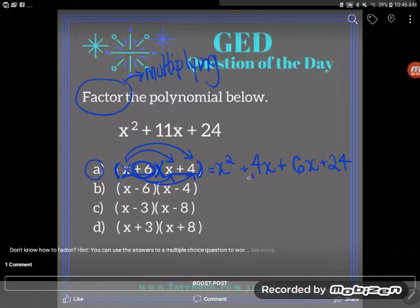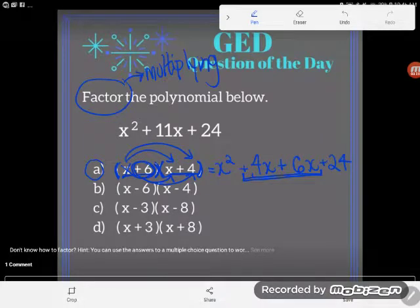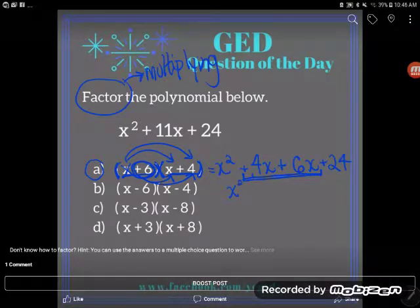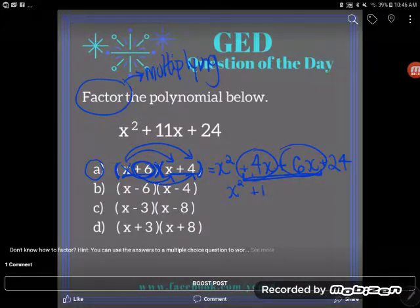But do make sure that as always you combine any like terms. That's part of simplifying. You add together anything that's the same kind of term. So there's no other x squared term, so I leave him be. But this is an x term and so is this. So plus 4x and plus 6x. I have a positive 4x and a positive 6x. I'm going to end up with positive 10x plus 24.